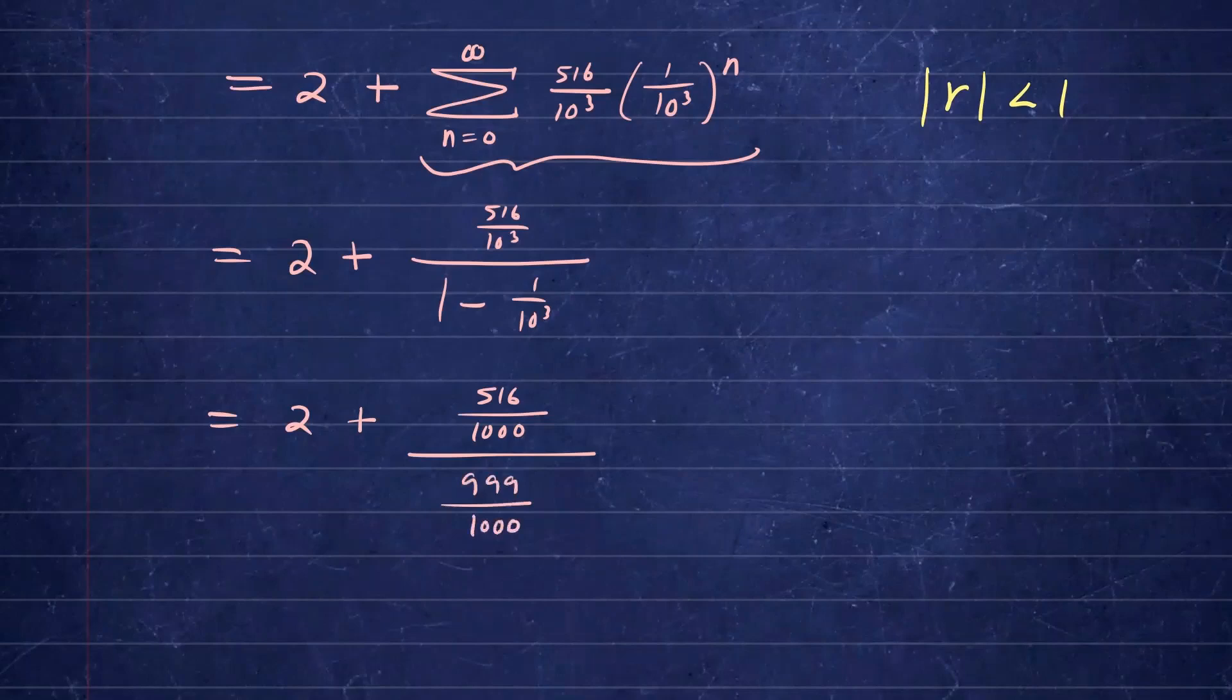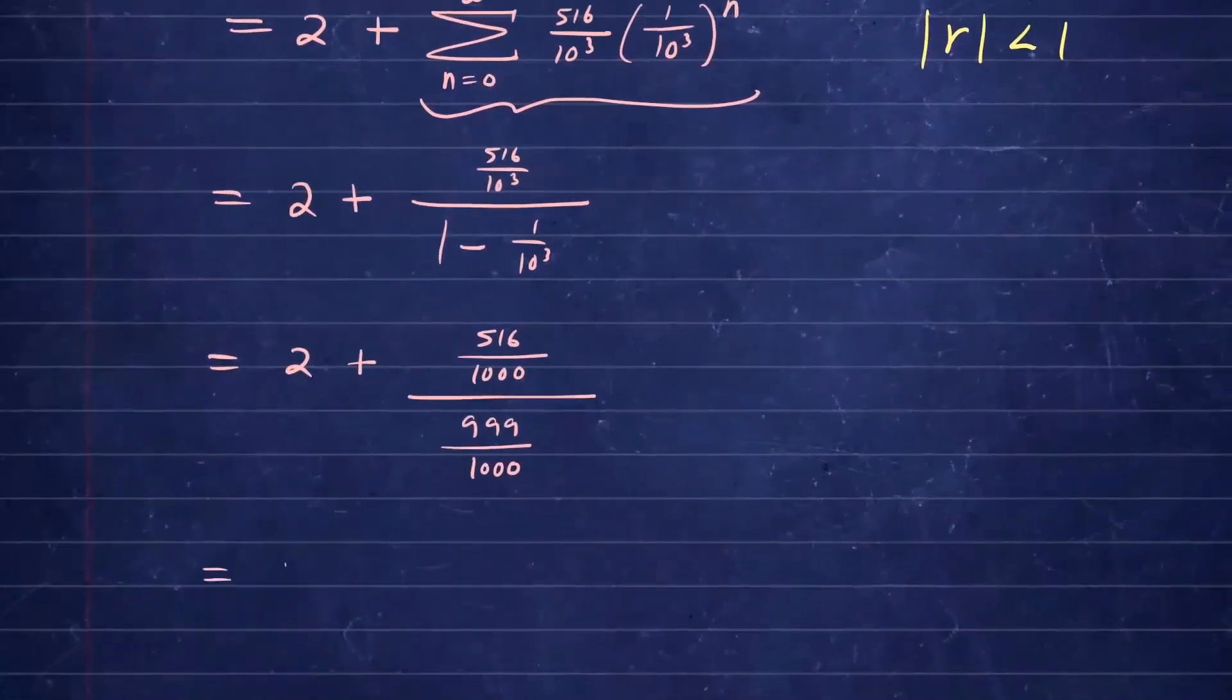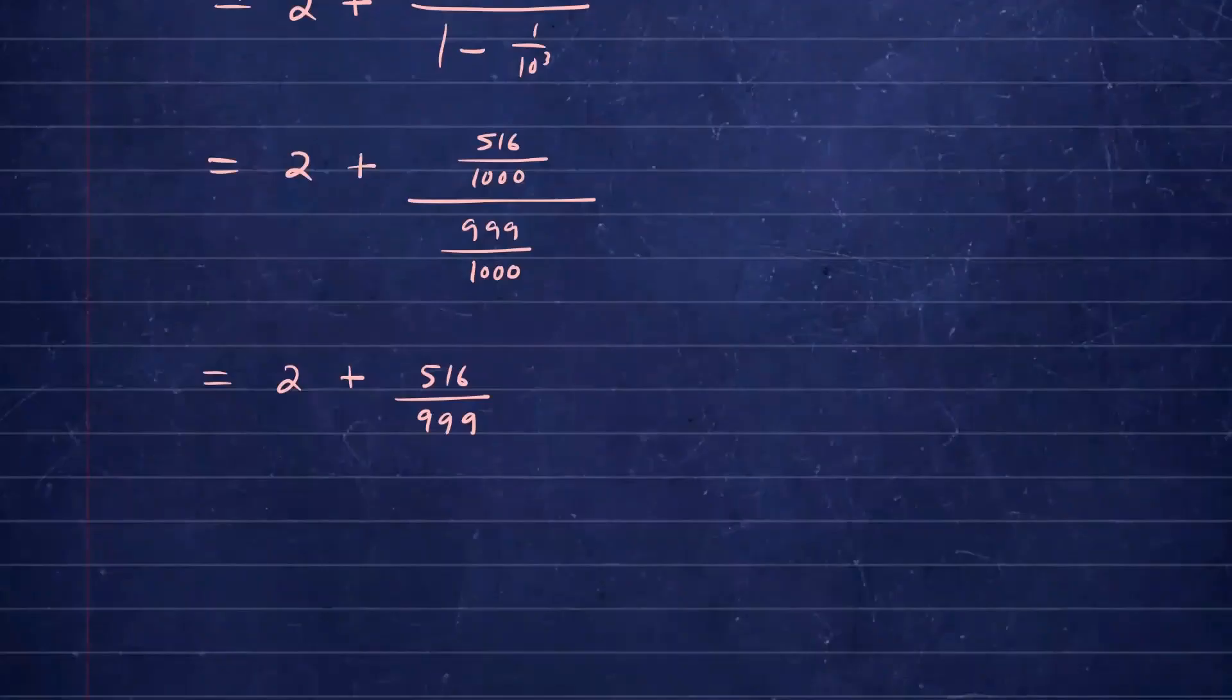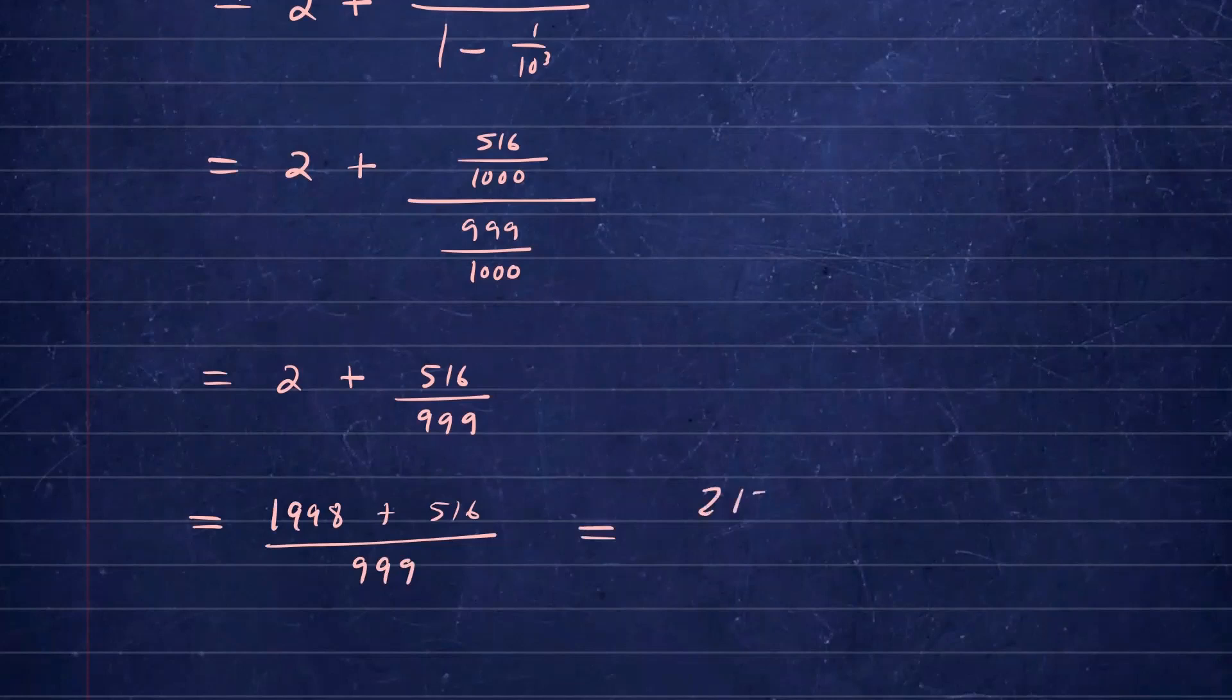And then this will simplify to 2 plus 516 over 999. Now combining these fractions using common denominators, you will have 1,998 plus 516 divided by 999. And this will be equal to 2,514 over 999.